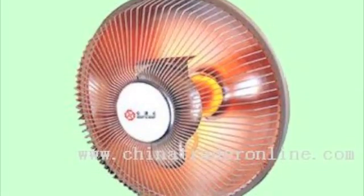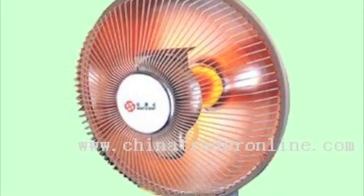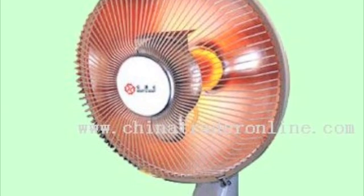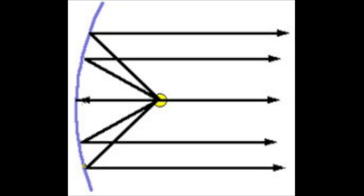Heaters such as this one make use of the reflective properties of parabolas. The heat source is located at the focus and bounces off the back to be redirected out in parallel lines towards the person. Have you ever walked by the parabolic reflector heater at Costco? It's so warm!